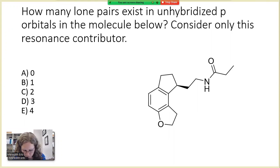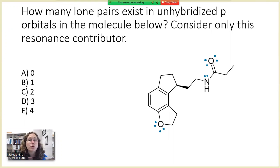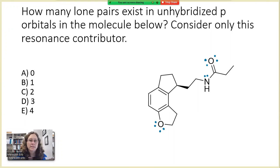Let's take a look at our molecule. First things first, I'm going to draw in the lone pairs on our heteroatoms, because the lone pairs can give us a visual about whether we have allylic lone pairs, lone pairs adjacent to positive charges — some of our key patterns of resonance. Knowing which lone pairs can participate in resonance is really important, because those will be in the unhybridized p orbitals.